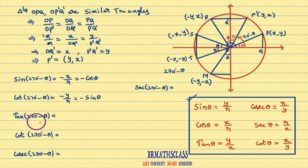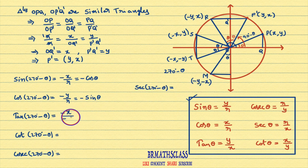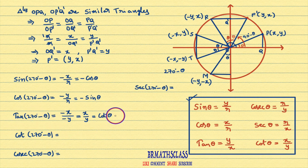Now, we will see what is tan(270° - θ). Initially, tan θ is defined as the y-coordinate of the point divided by x-coordinate of the point. tan(270° - θ) means the y-coordinate of point M divided by x-coordinate of point M. The y-coordinate of point M is -x, and the x-coordinate is -y. So minus minus will get cancelled, this becomes x/y. x/y is cot θ. Therefore, tan(270° - θ) = cot θ.